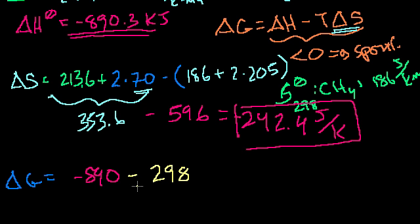I should get in the habit of not saying degrees when I say Kelvin, which is 25 degrees Celsius, times our change in entropy. Now, this is going to be a minus. Now you might say, OK, minus 242. You might want to put that there. But you have to be very careful.